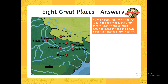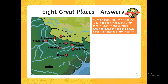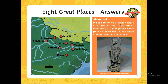Here we have our eight great places for the Buddhist pilgrimage sites. The first one is Lumbini, which is where the Buddha was born — so perhaps Buddhists may want to go there to see where the Buddha was born. Then we have Shravasti, a major city where Buddha spent a great deal of time. He performed two miracles there, where flames came from his upper body and streams of water from his lower body. He's considered a God, so people want to go there to see where he performed these miracles.